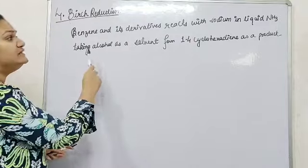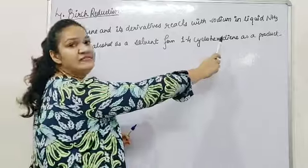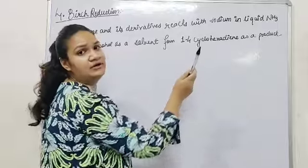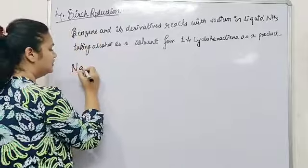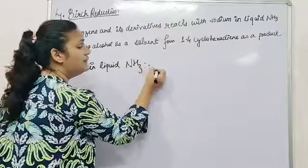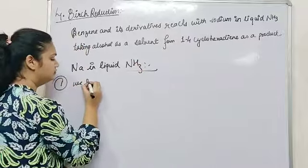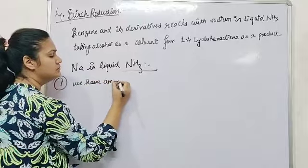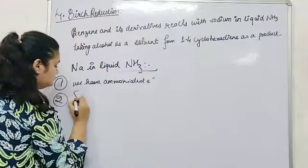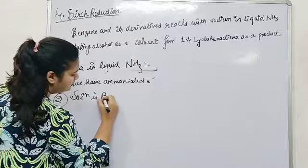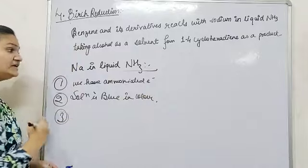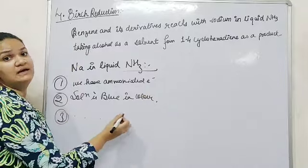The next name reaction is Birch reduction. In Birch reduction, benzene and its derivatives react with sodium in liquid ammonia, taking alcohol as a solvent, giving 1,4-cyclohexadiene as a product. The properties of sodium in liquid ammonia: first, we have ammoniated electrons; the solution is blue in colour; and free electrons are present in the solution, therefore the solution is paramagnetic.